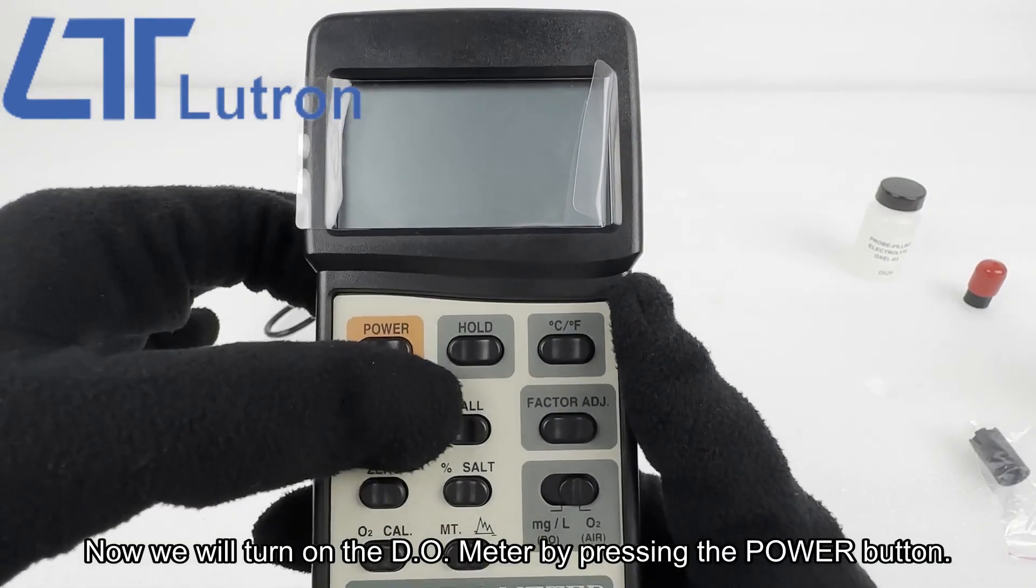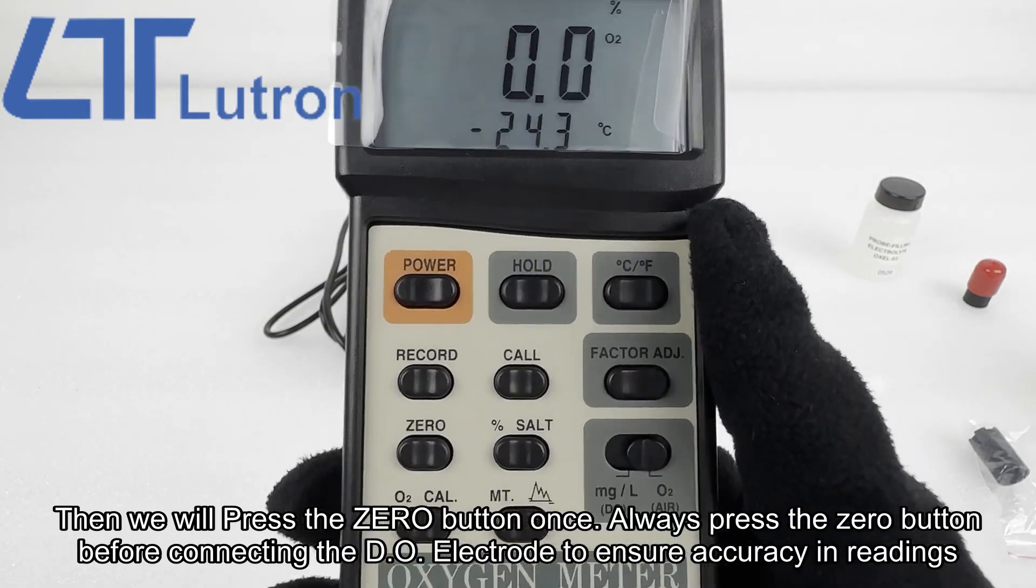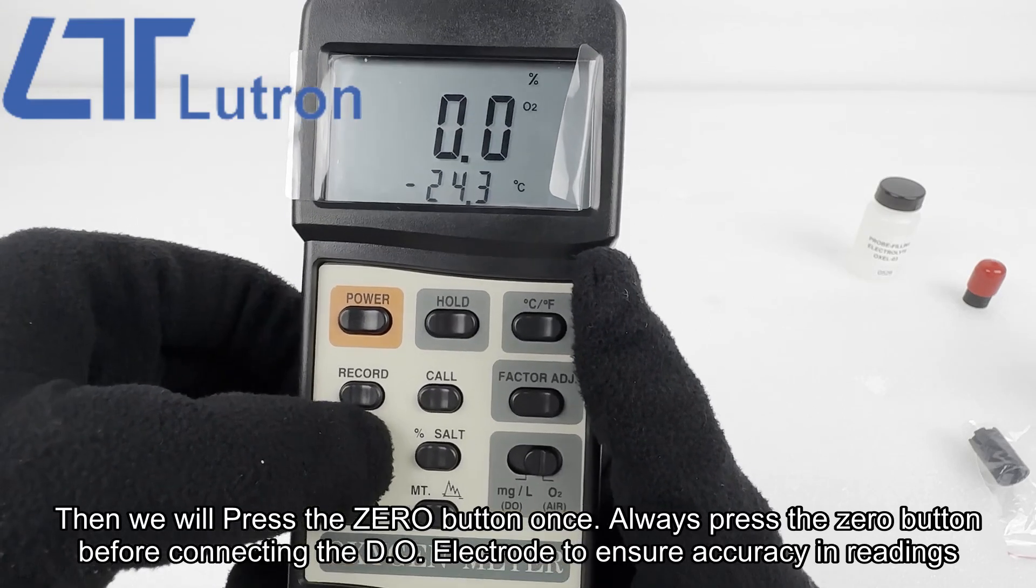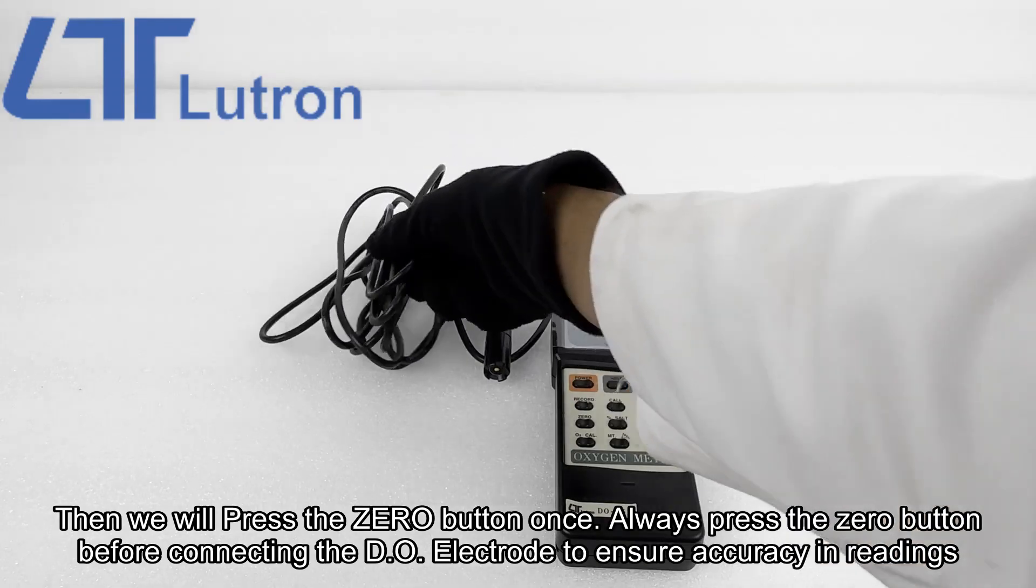Now we will turn on the DO meter by pressing the power button. Then we will press the zero button once. Always press the zero button before connecting the DO electrode to ensure accuracy in readings.